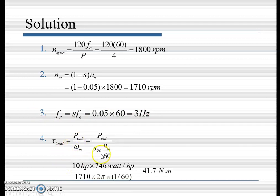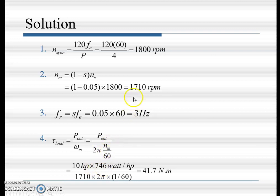For the shaft torque: T = P_out / ω_m, where ω_m = 2π·n_m / 60. P_out is 10 HP, which we convert to watts by multiplying by 746. With n_m = 1710 rpm, the shaft torque comes out to be 41.7 Newton-meters.